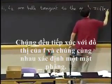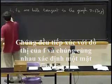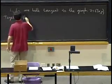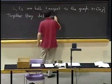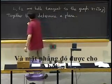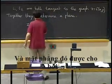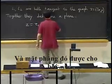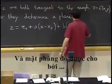Together, these two tangent lines determine a plane. That plane is given by the formula: z equals z zero plus a times (x minus x zero) plus b times (y minus y zero).